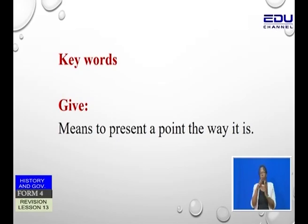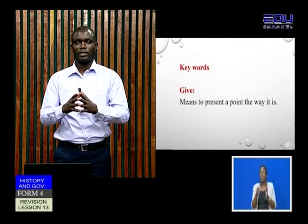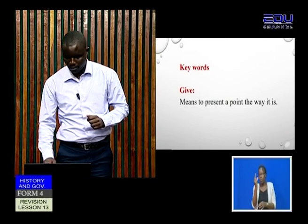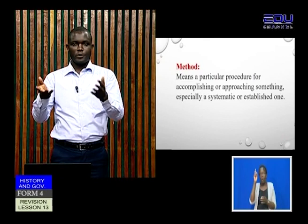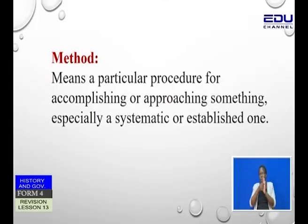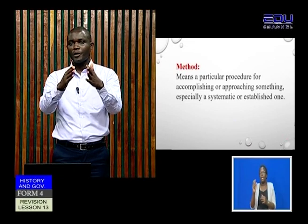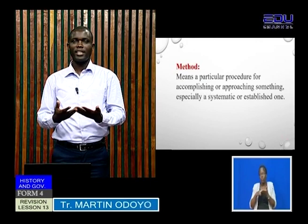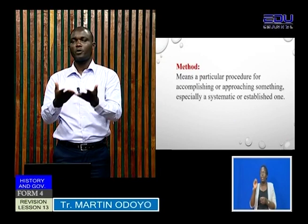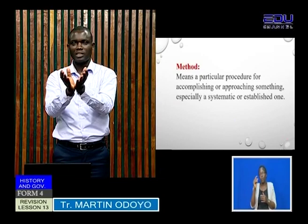The first key term is 'give.' So when a question is framed in a manner that it starts with 'give,' what is it that it requires? A question of 'give' requires that you present a point the way it is. In this manner, the examiner doesn't want you to explain much — just give that short answer the way it is. Our question was about 'give methods,' so we need to understand: what do we mean by the word 'method'? A method is a particular procedure for accomplishing or approaching something, especially a systematic or established one.